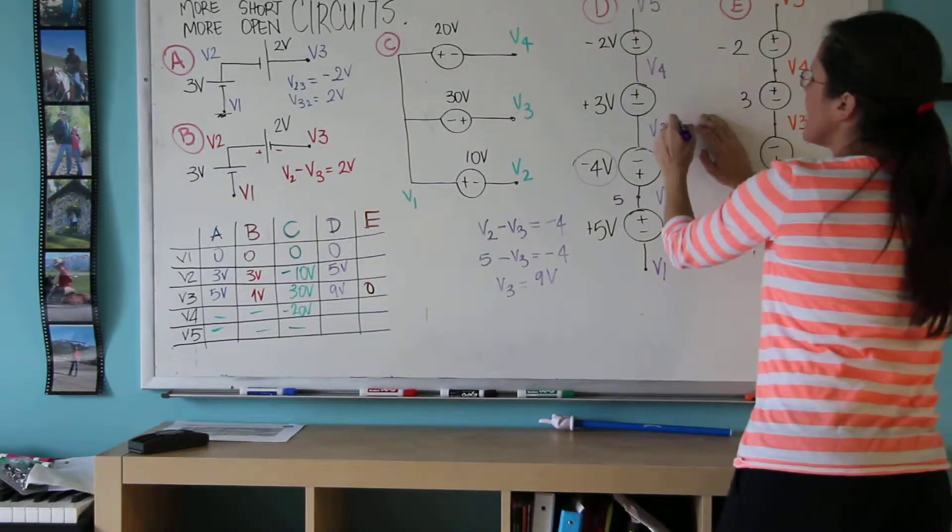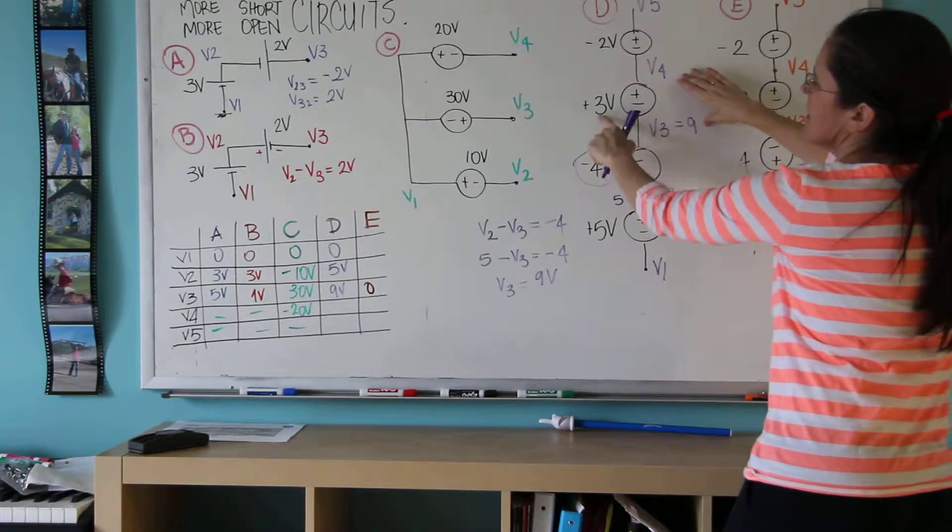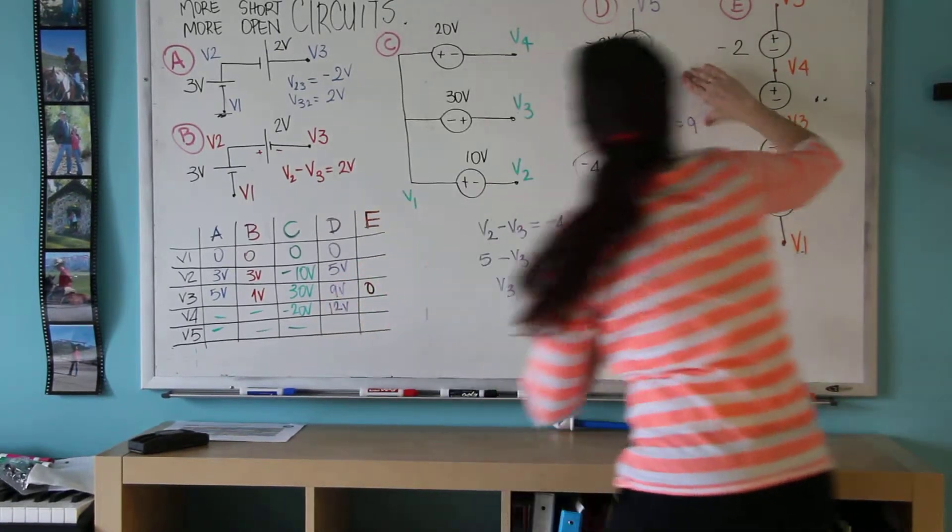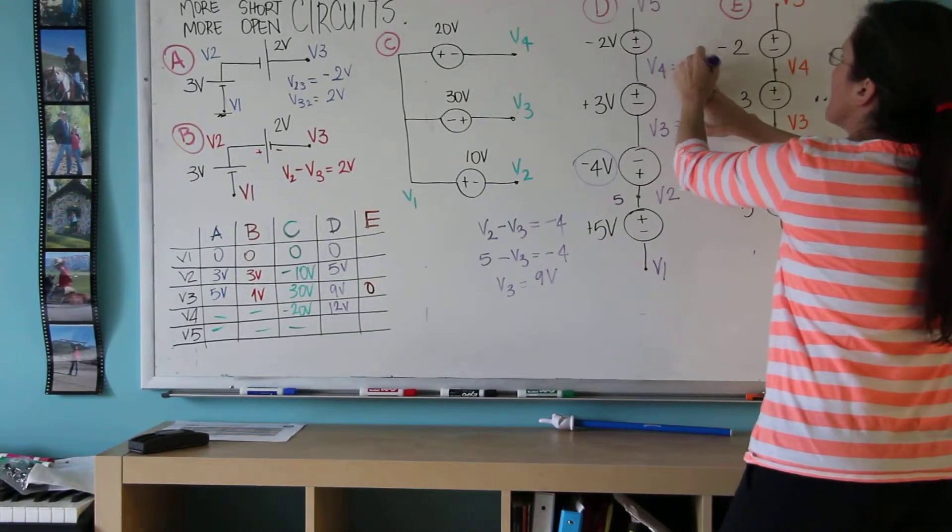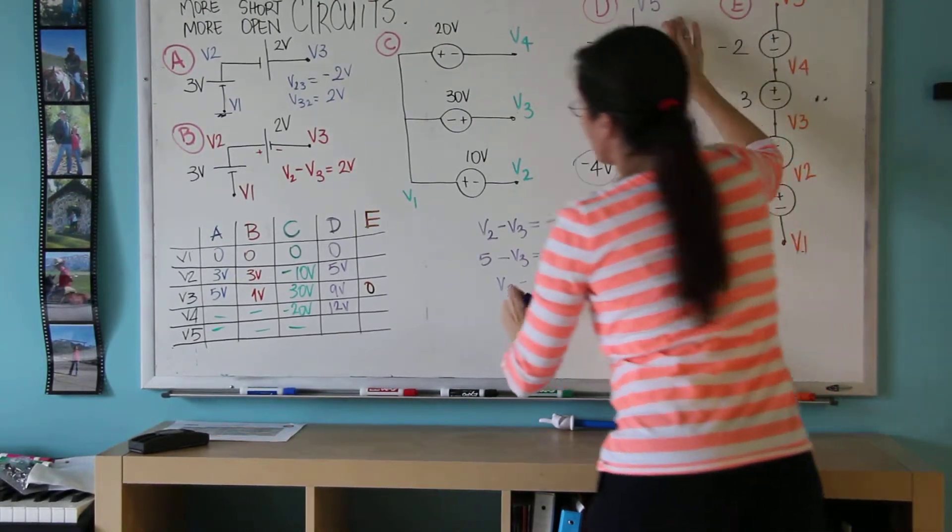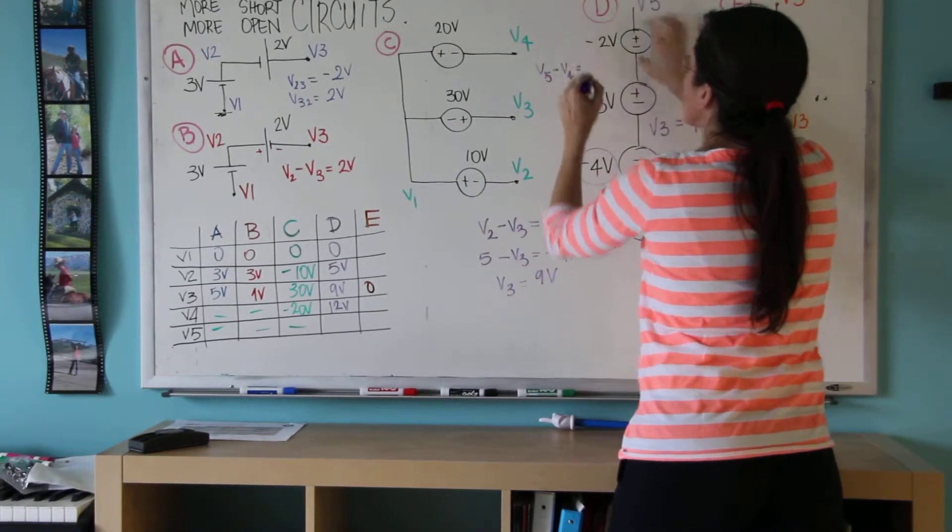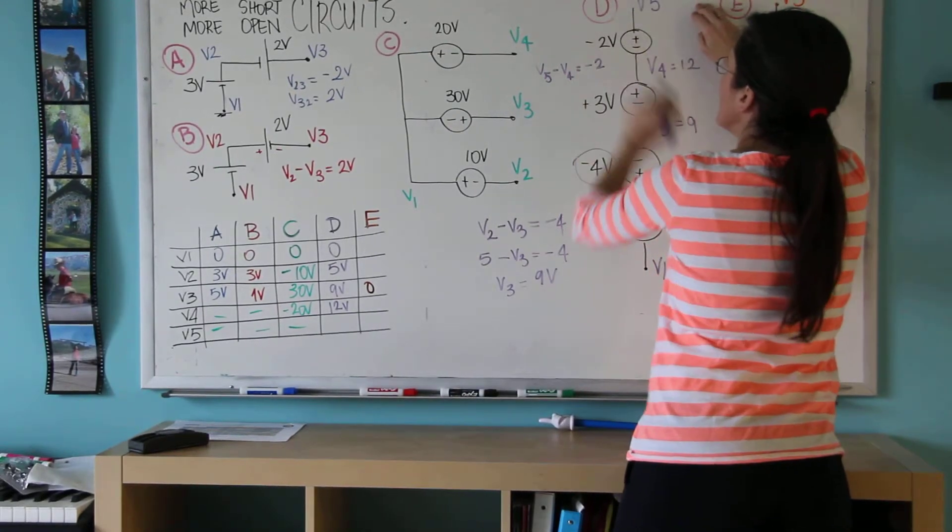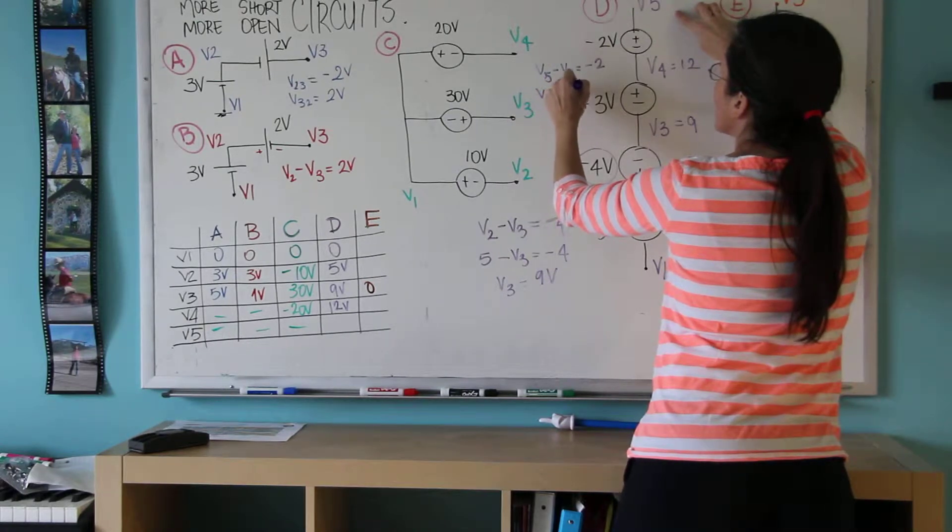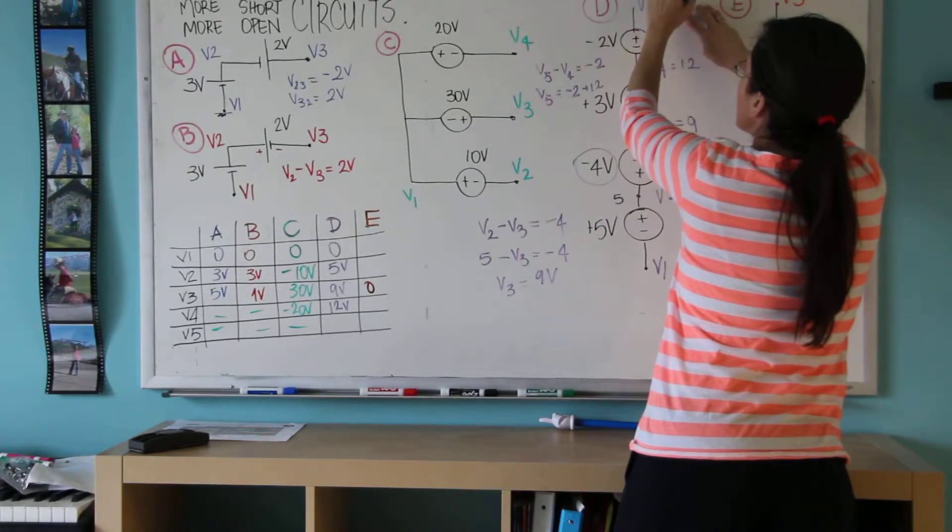And now this guy is 9. So V4 minus 9 equals 3. And therefore, V4 equals 12 volts. So this is 12. And now V5 minus V4. I don't even have a space here. V5 minus V4 equals whatever number is in here, minus 2. So V5 equals minus 2 plus 12, which is 10.